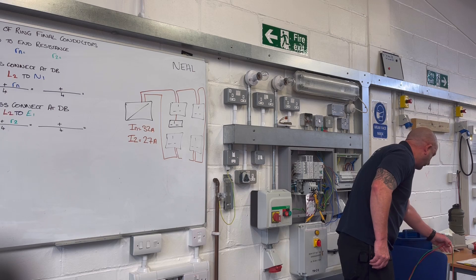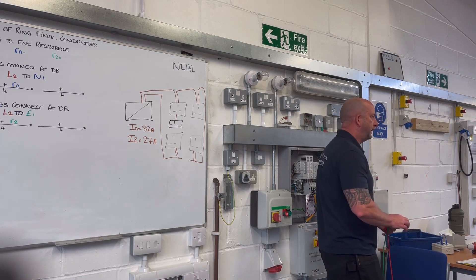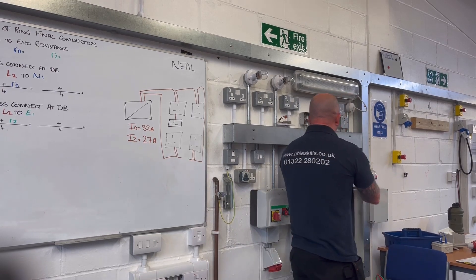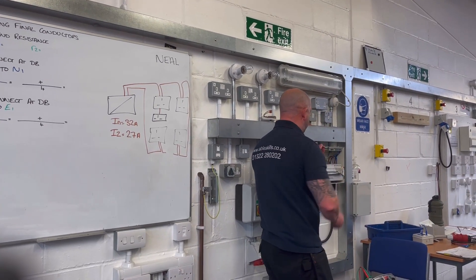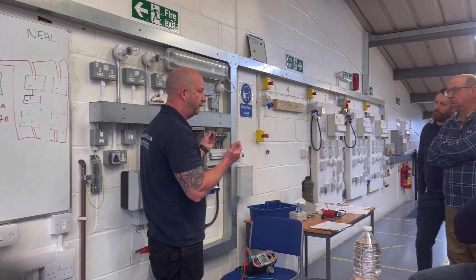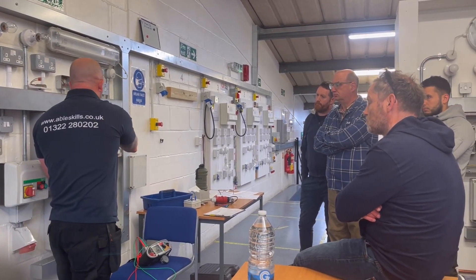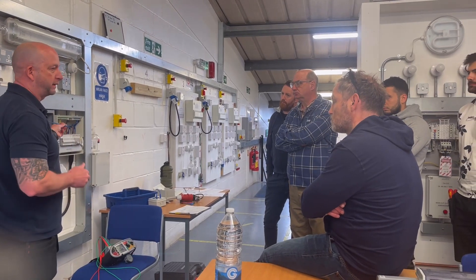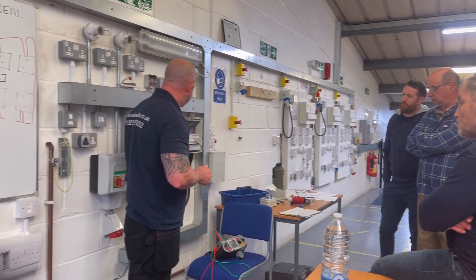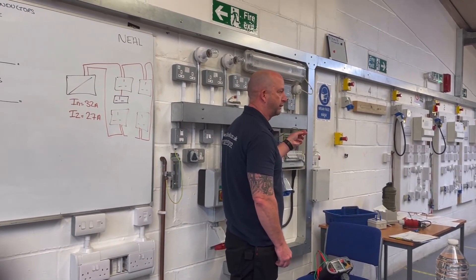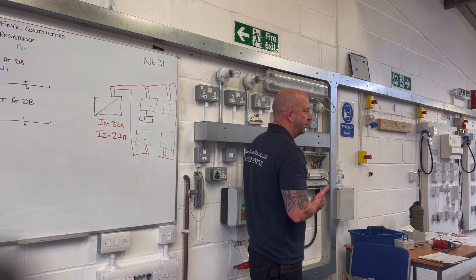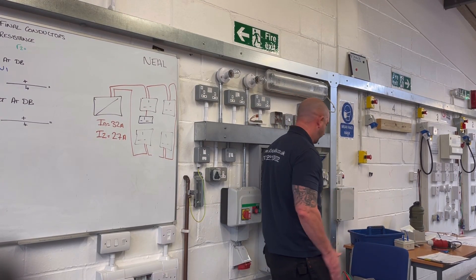So there are three steps to continuity of ring final. Step one is end to end — we're going to measure our loops of cable. We're going to measure the line (brown) loop and record that as little R1. We'll do the same with the neutral loop and record it as little Rn, and the same with the CPCs as little R2. We're just making sure we've got a closed loop of cable, because if we haven't, then no way is this a ring final circuit.